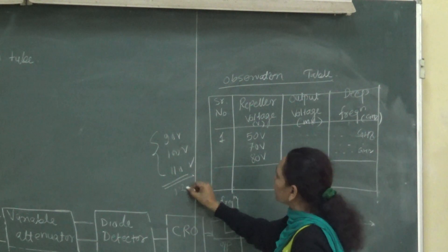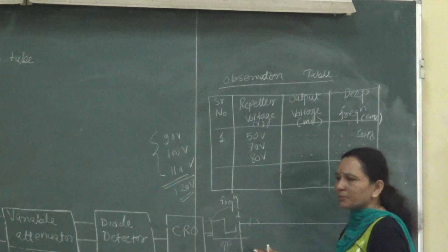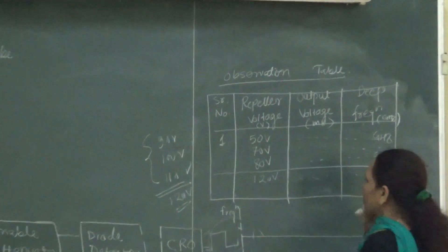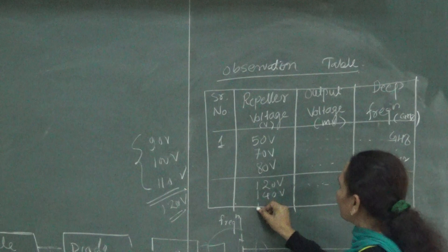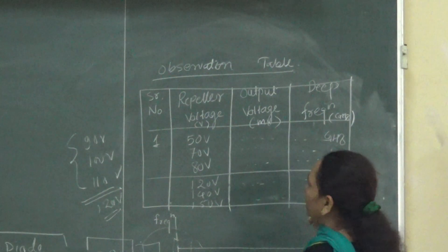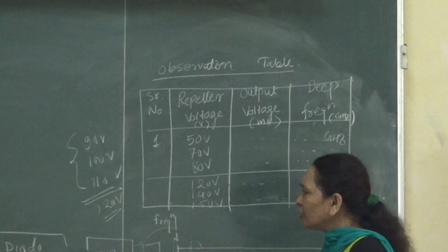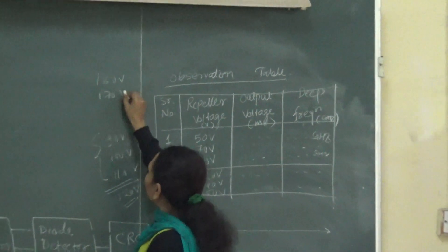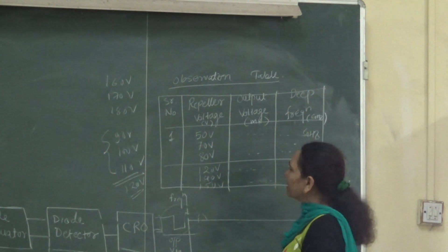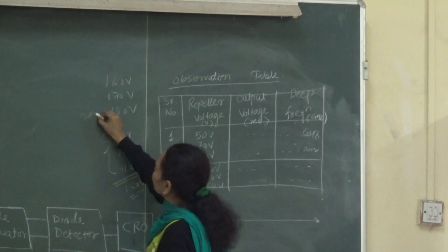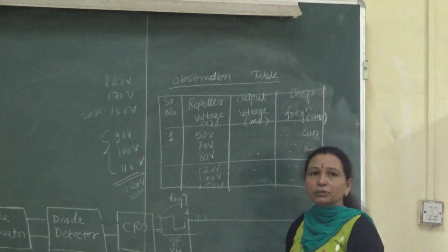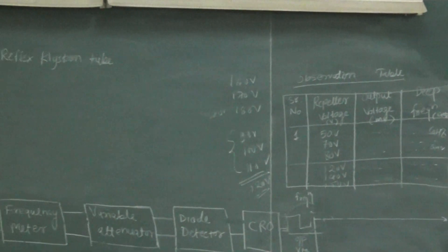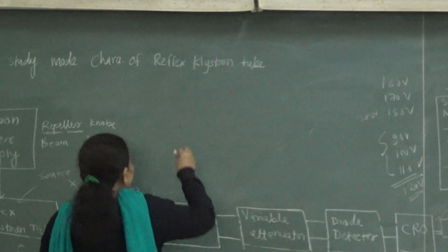Further, if you increase the repeller voltage to, say, 120 volts — note these are hypothetical values for explanation — you will again get some output voltage and a corresponding frequency. Then at 140 volts and 150 volts you will also get output. After 150 volts, again at 160, 170, and 180 volts you get nothing on the CRO. But if you go to 200 volts, you will again start observing the output voltage on the CRO.